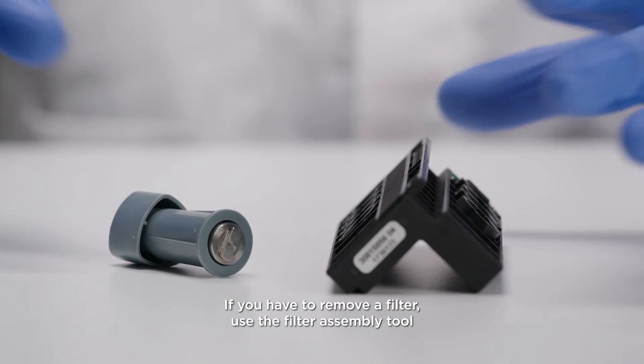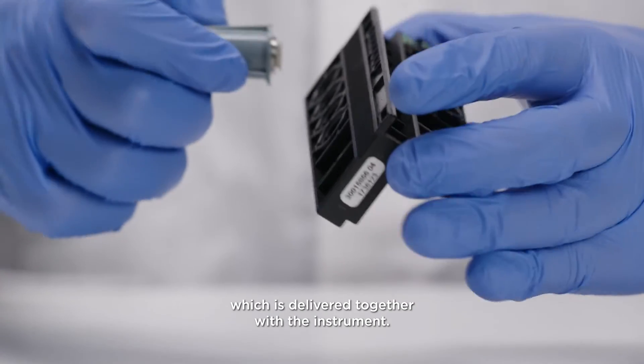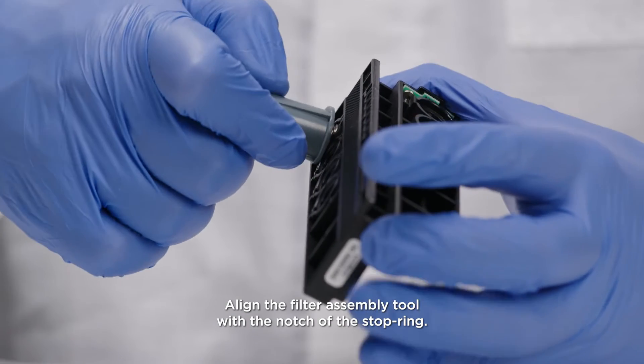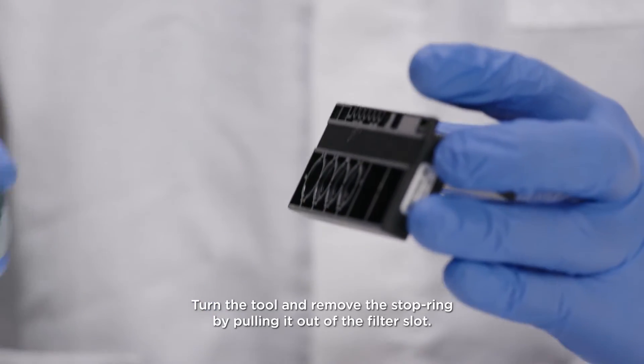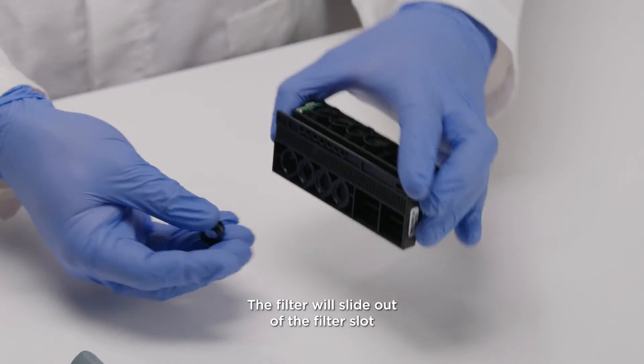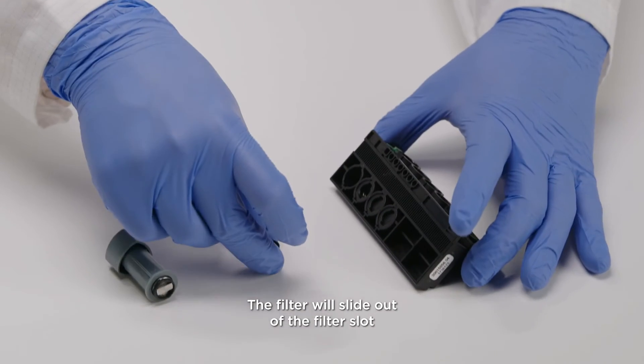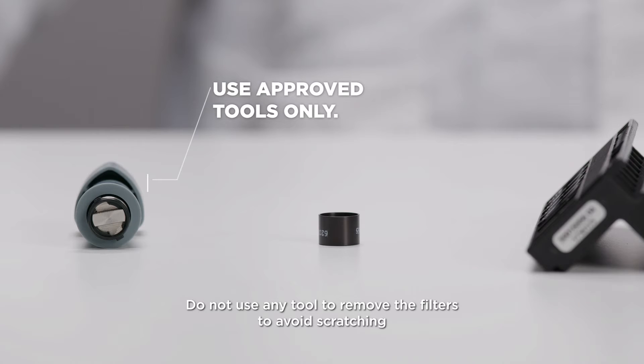If you have to remove a filter, use the filter assembly tool which is delivered together with the instrument. Align the filter assembly tool with the notch of the stop ring. Turn the tool and remove the stop ring by pulling it out of the filter slot. The filter will slide out of the filter slot when the filter carrier is turned over. Do not use any tool to remove the filters to avoid scratching or damaging the filter.